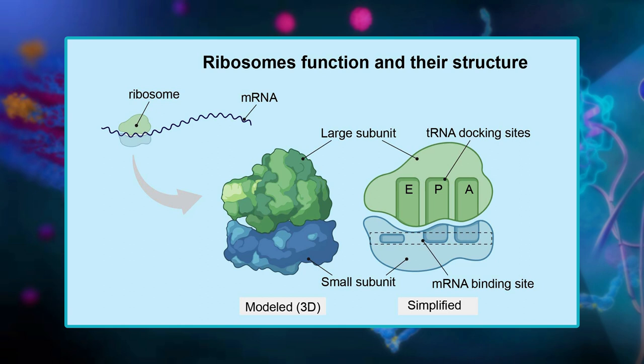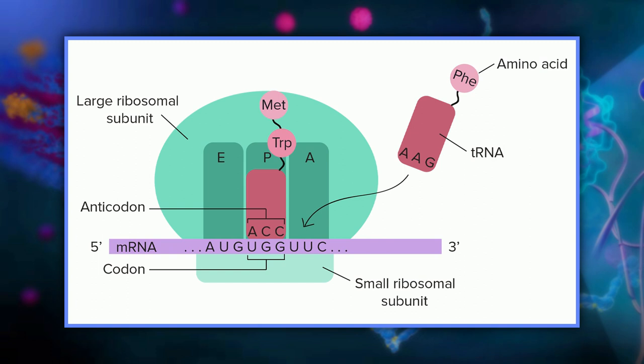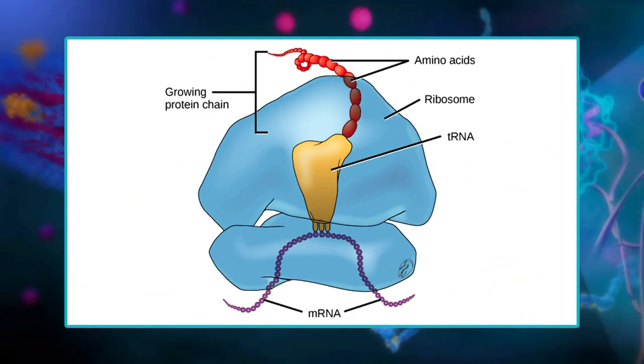Ribosomes are the structures where polypeptides or proteins are built — also called protein-synthesizing factories. They are made up of proteins and RNA. Each ribosome has two subunits, a larger one and a small one, which come together around an mRNA. The ribosome provides slots where tRNA can find their matching codons on the mRNA template and deliver their amino acids. These slots are called the A site (acceptor site), P site (peptidyl site), and E site (exit site). Ribosomes also act as an enzyme, catalyzing the chemical reaction that links amino acids together to make a chain.